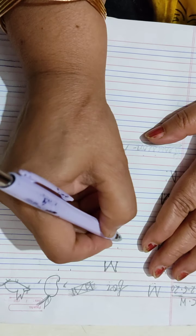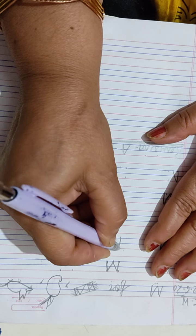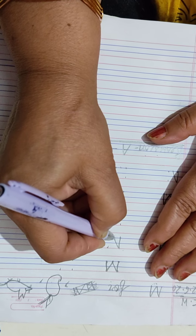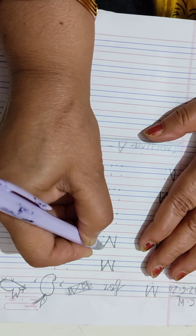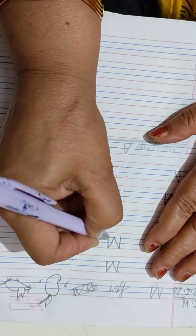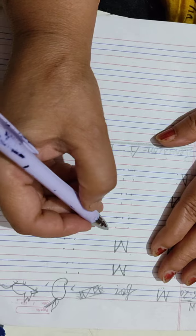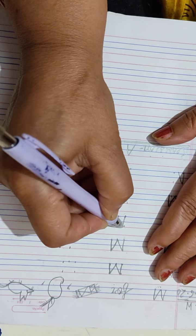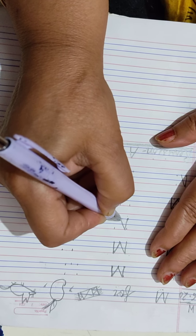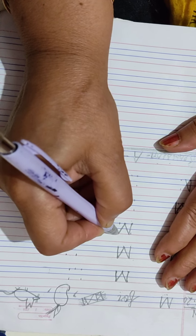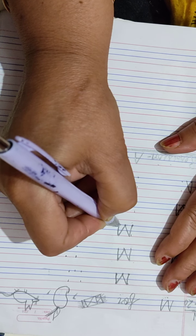M for Matt. Standing, slanting, again slanting, standing line. M for Matt. Standing, slanting, again slanting, and standing line.